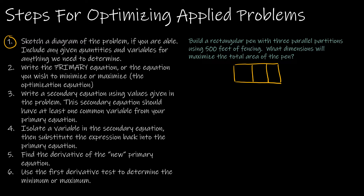Step one: sketch the diagram, include any given quantities and variables for anything we need to determine. We're going to use the fact that we're maximizing the total area and that we have 500 feet of fencing. I'm going to give the diagram some variables so that when I do the rest of the question everything makes sense — I'm going to be solving for those variables, which are the dimensions.